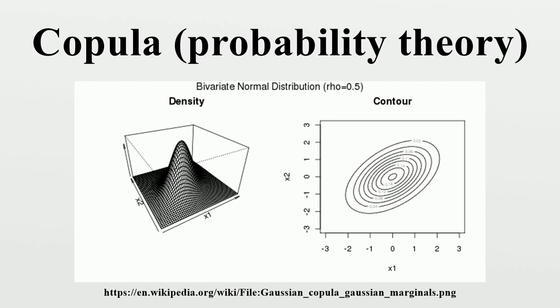If the copula and margins are known, this expectation can be approximated through the following Monte Carlo algorithm: draw a sample of size n from the copula C; by applying the inverse marginal CDFs, produce a sample of the original random vector; then approximate the expectation by its empirical value.